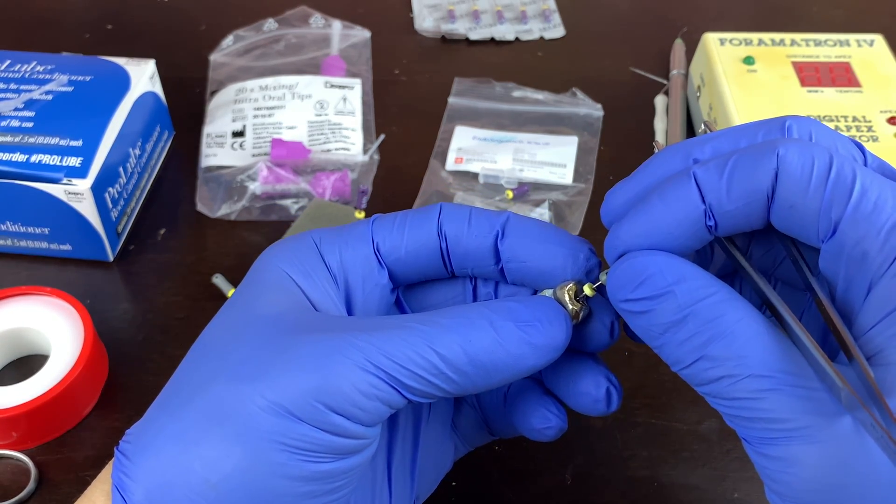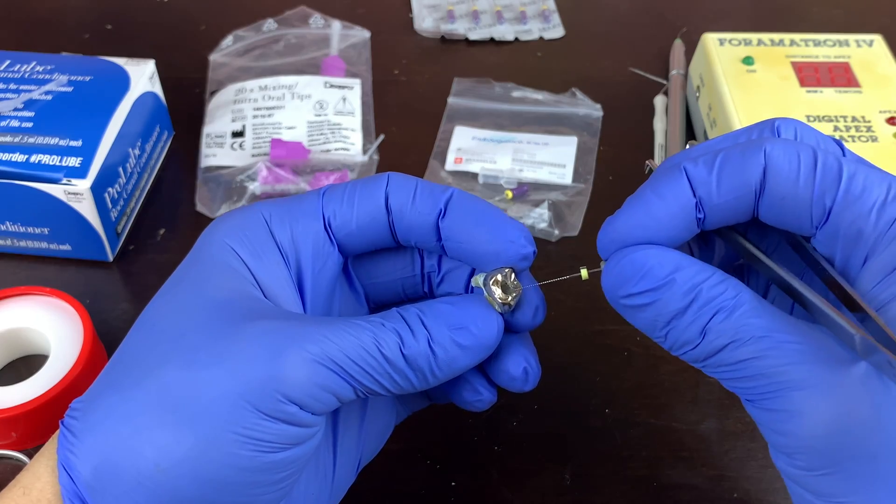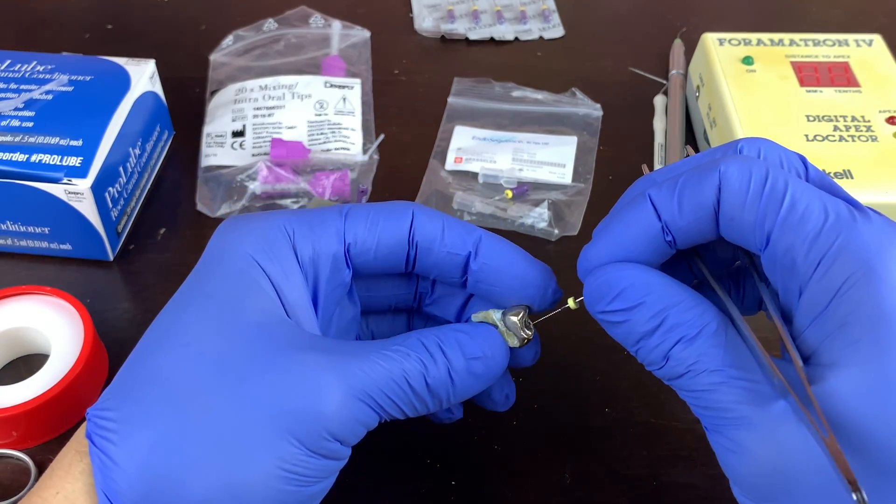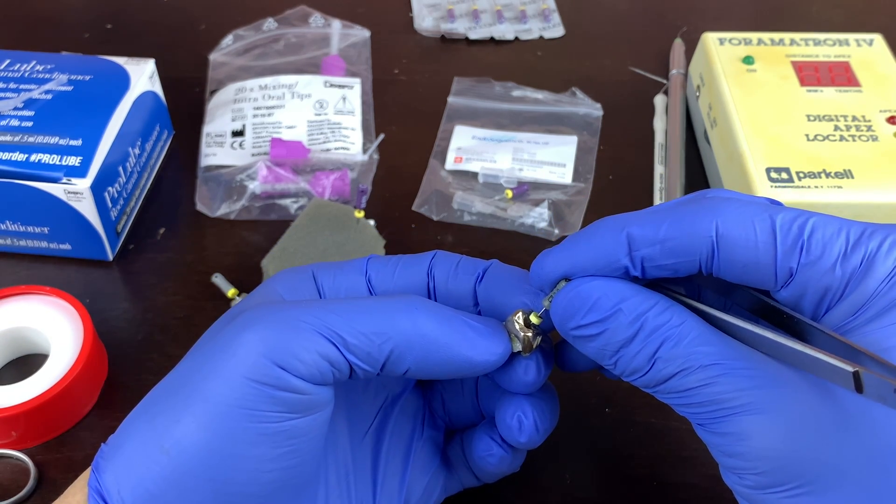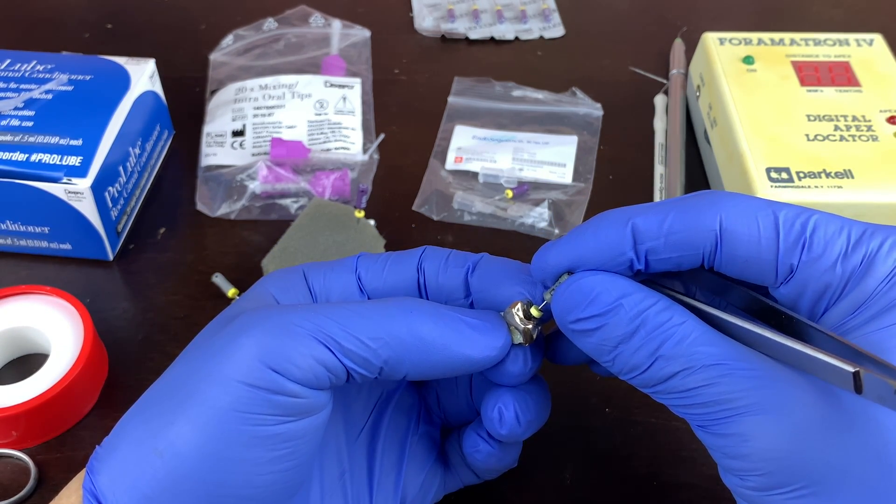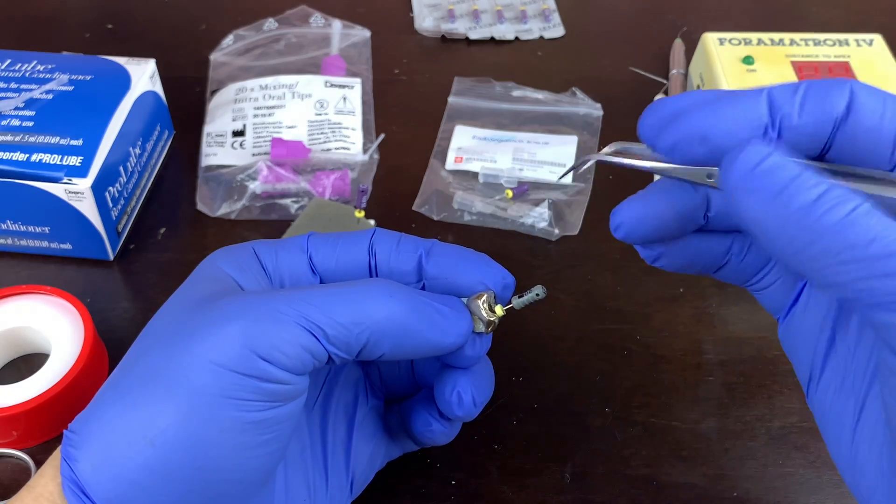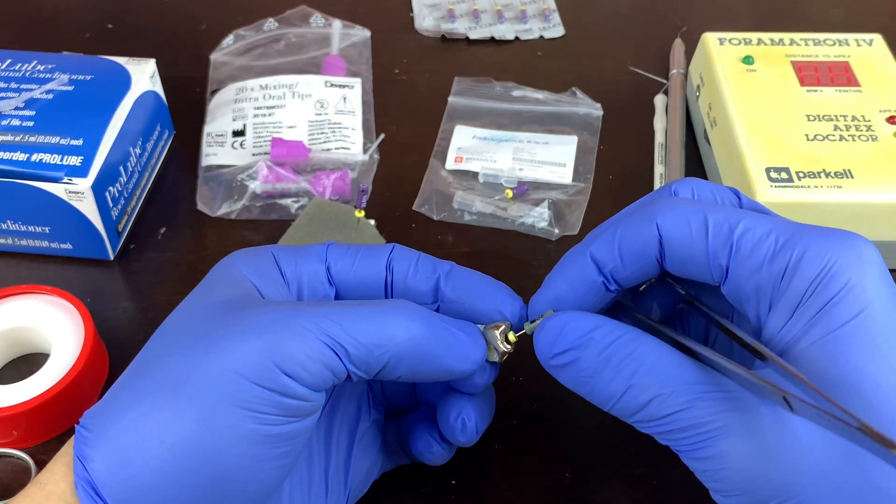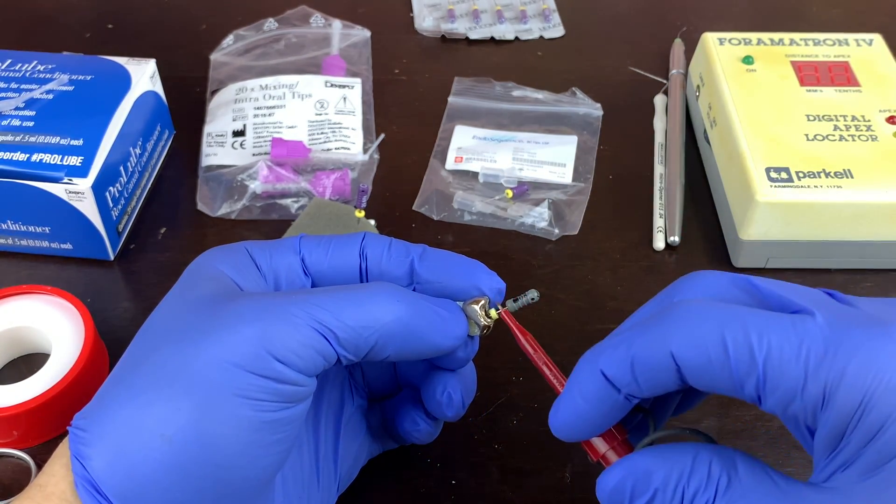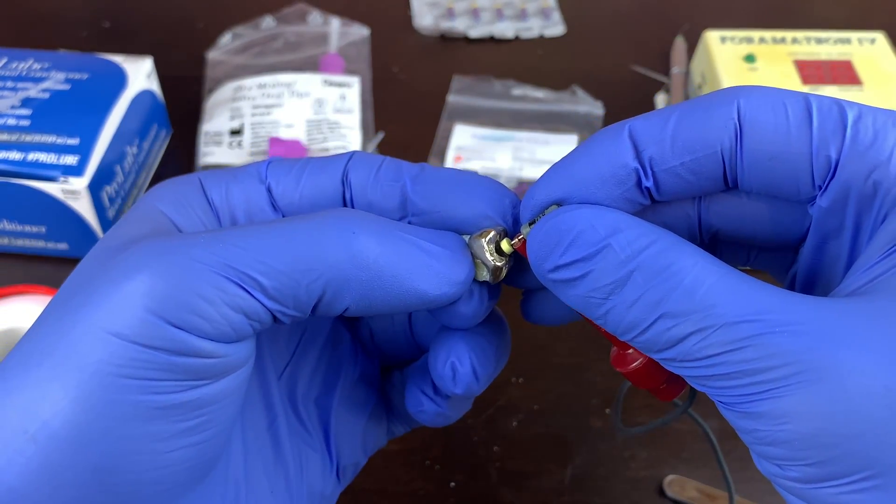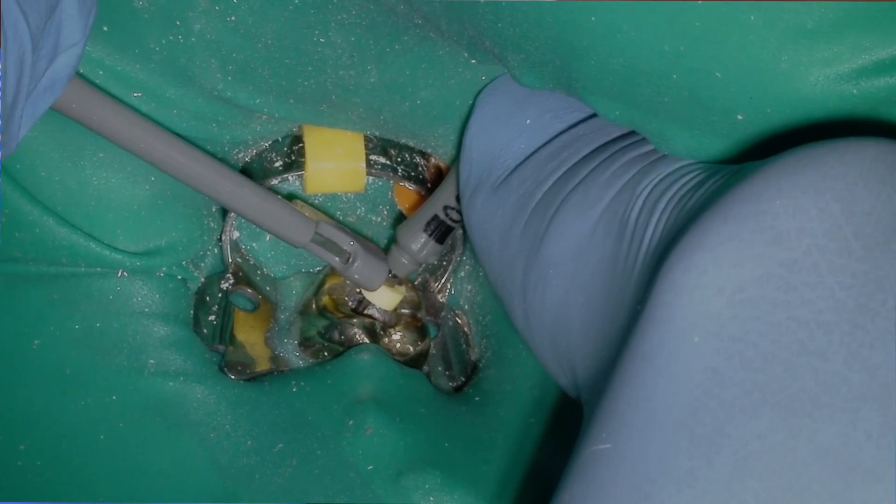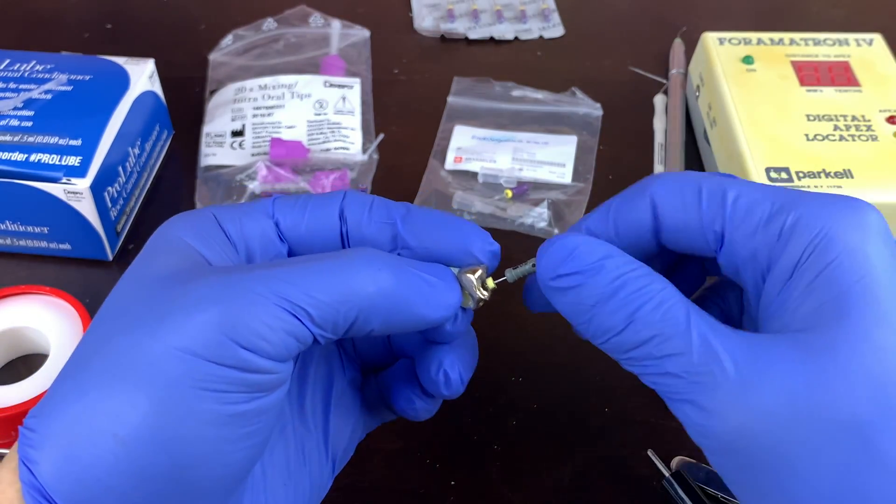Because we all know we get that crazy sporadic measurement when we touch metal, a gold crown, or a large restoration. Now, the second technique is a little more difficult, is just kind of keep the file centered. And then once you get your length, it doesn't matter if it touches. Place your file there. So you get your working length with your apex locator. Place your file and place your apex locator clip on there. Keep the file centered as close as possible. And then once you are happy with your length, then you can pull it over to your reference point and then measure from there.